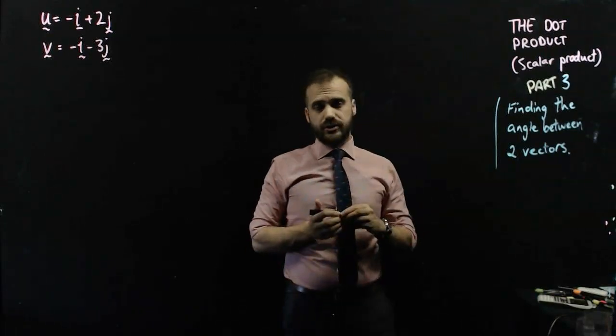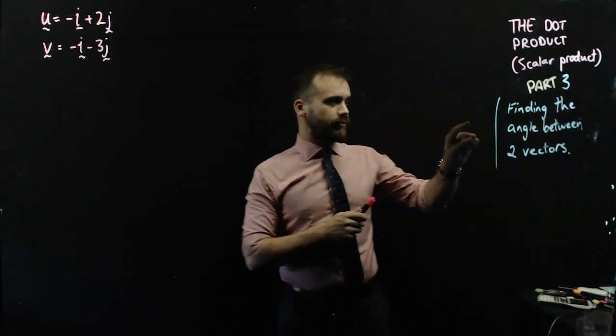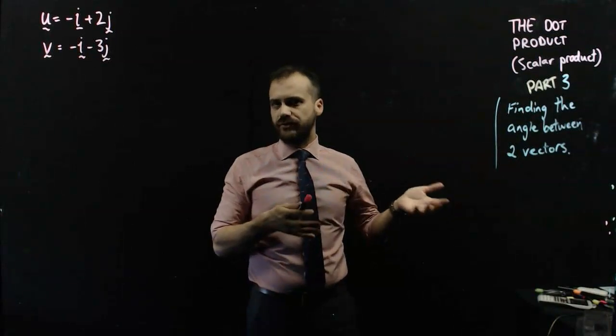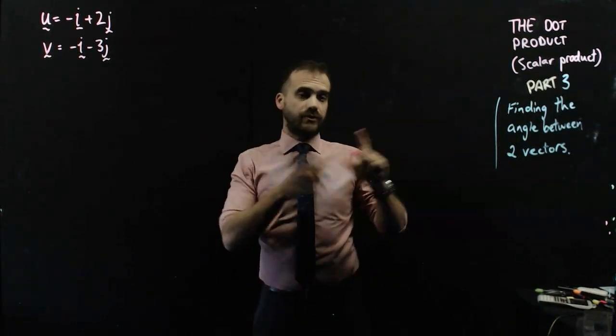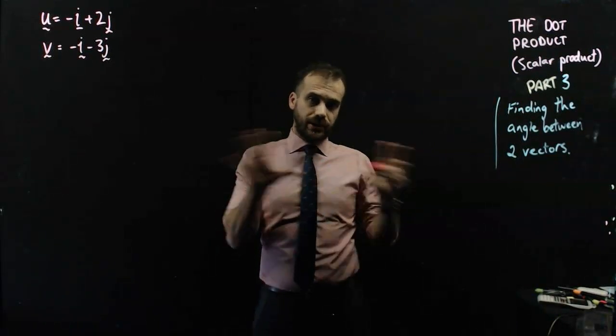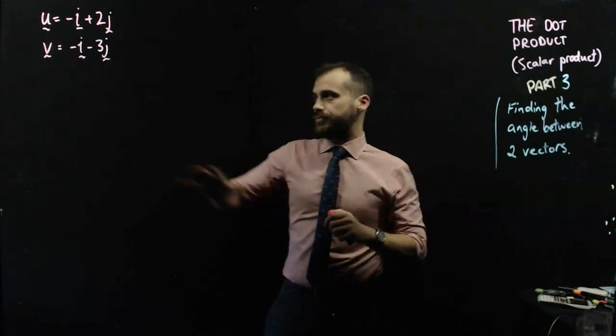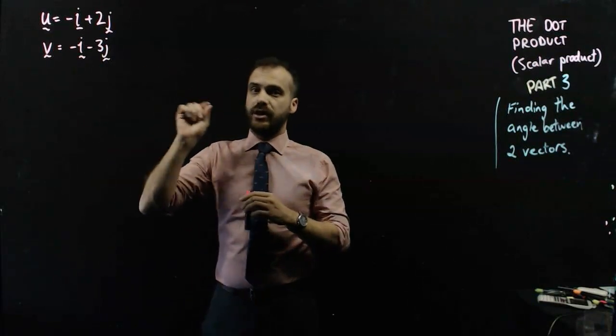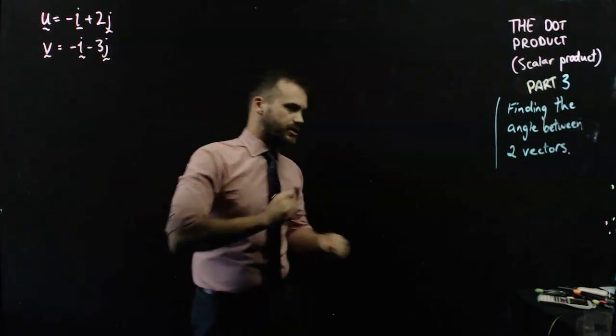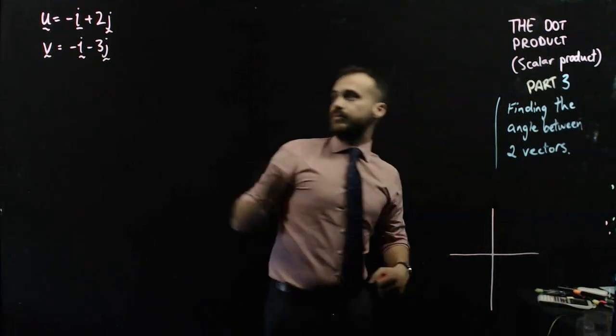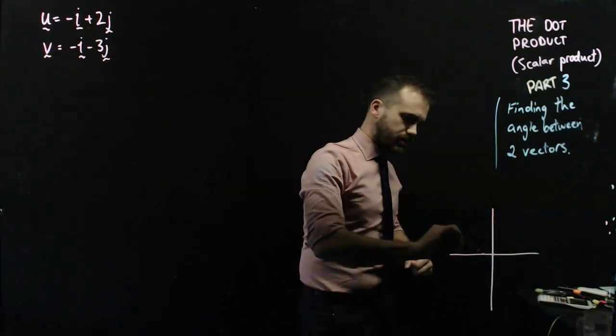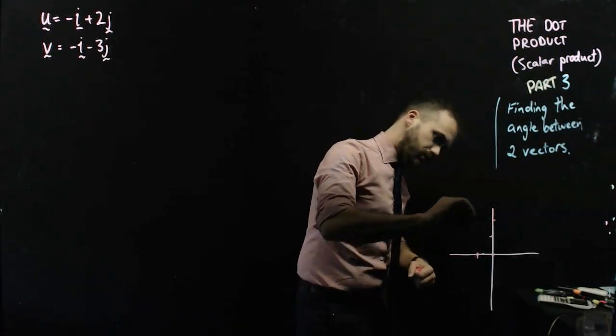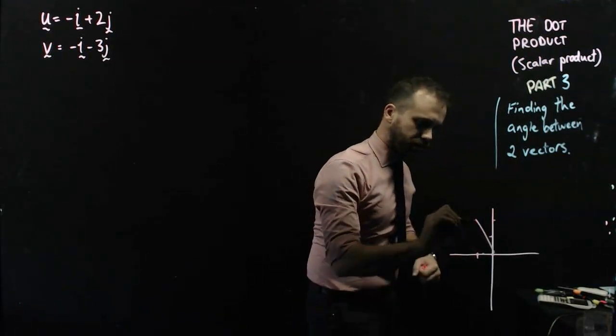Now this is part 3 of our dot product series, this time we're going to find the angle between two vectors. We're going to use the fact that we've got two ways to find the dot product to allow us to do this. So, two vectors here and we're going to find the angle between them. I'm just going to get a rough idea of what that's going to look like. Negative i plus 2j, so one across and two up. So that first vector looks like that.